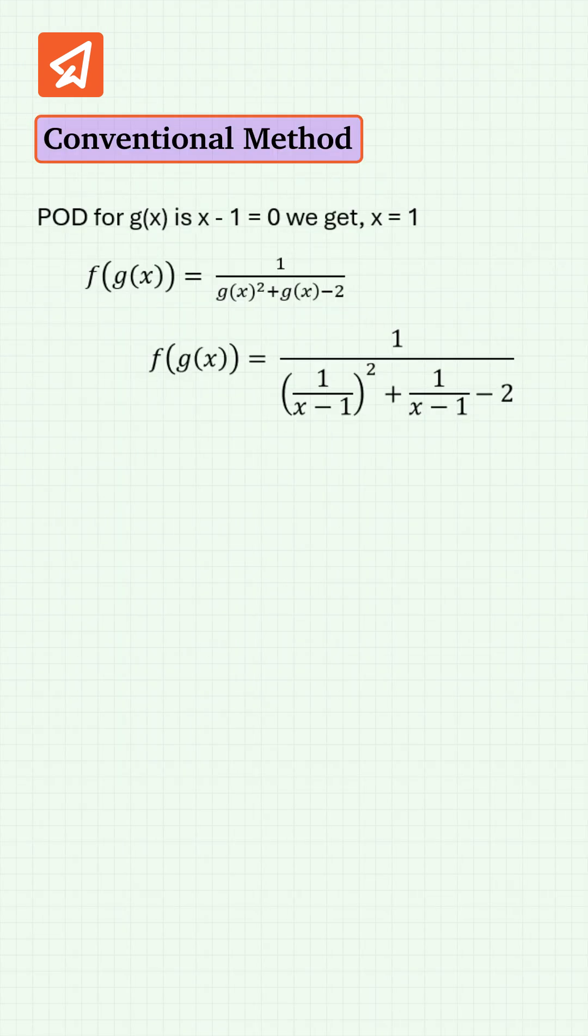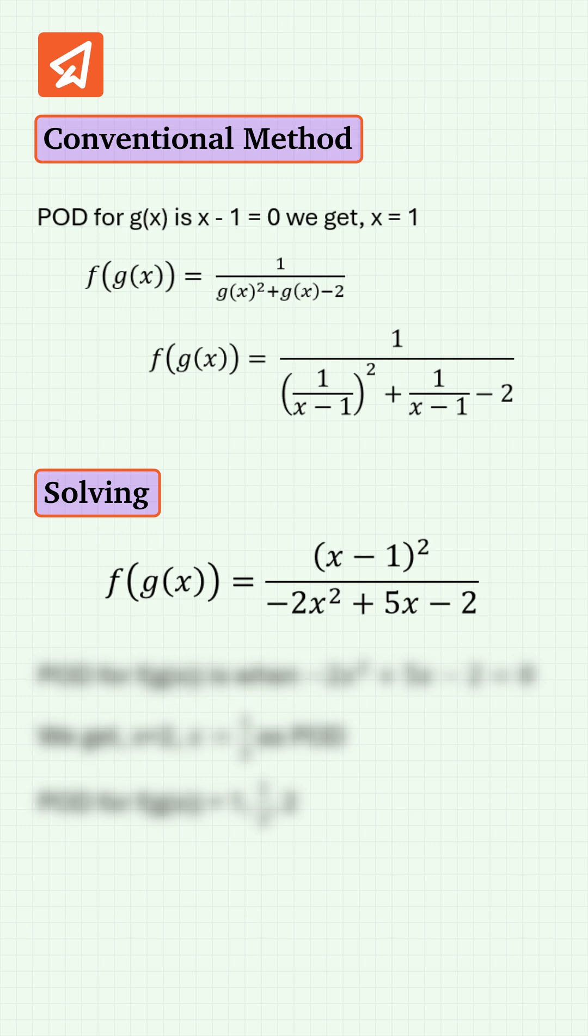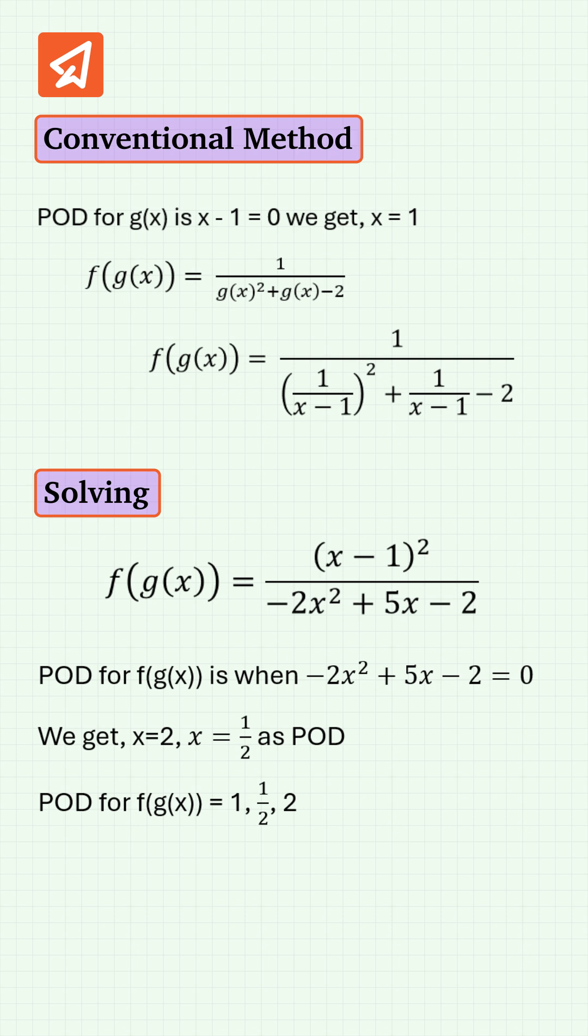If you do the conventional method: first find POD of inner function g(x), that is x = 1. Next find f(g(x)) and we get POD for f(g(x)) as x = 2 and 1/2. So x = 1, 2, and 1/2 are POD for f(g(x)).